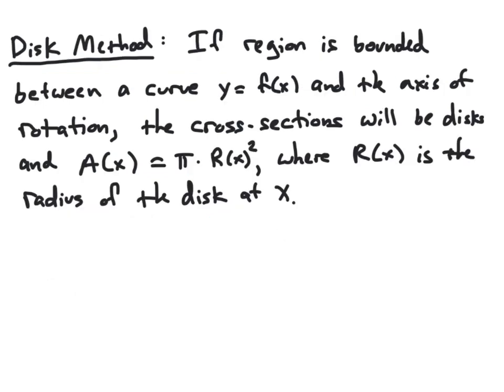Before we compute the volume of the solid we just discussed, let's look at the details behind the disk method. To apply the disk method, we need to have a region that is bounded between some curve y equal f of x and the axis of rotation. In the example we just discussed, we saw that the region was bounded between y equal the square root of x and the x-axis, which is the axis of rotation. When we have a region bounded in this way, the cross-sections will always end up being disks.